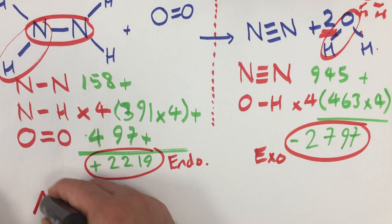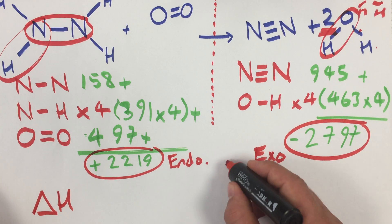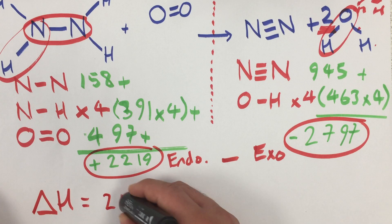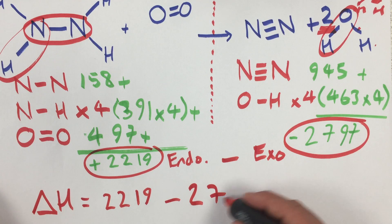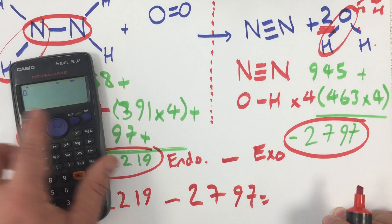And so what we have to do to work out the total enthalpy change is we have to do the endo minus the exo. So we have to do 2,219 minus 2,797, and that will give us an overall enthalpy.